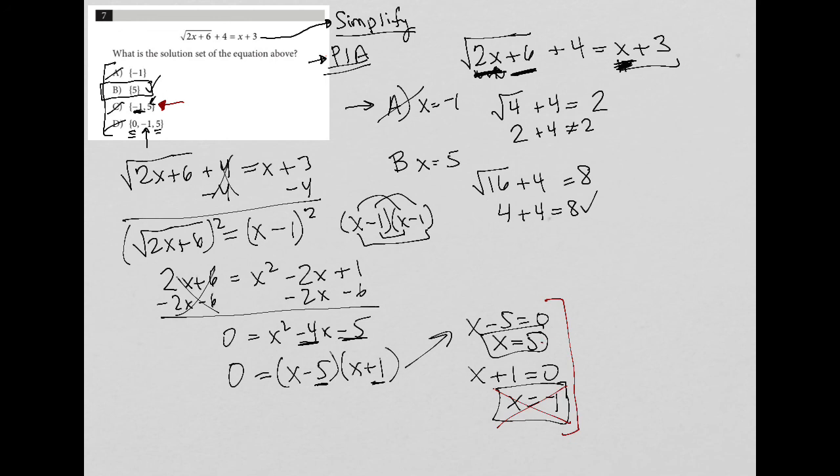Plug in x equals 5, which of course we already did here, so we see that it works. But then plugging in negative 1, which we did here, we will see that it doesn't work. And that's why only the x equals 5 answer is correct for this particular question.